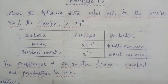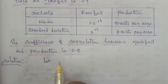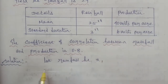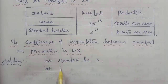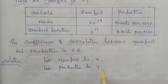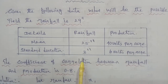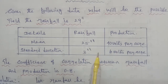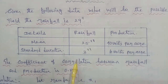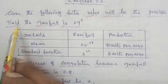Let rainfall be x and let production be y. In this given question, we need to find the regression equation. The regression equations are x on y and y on x. In this given question, we will use the regression equation y on x, since rainfall is given and we need to find production.